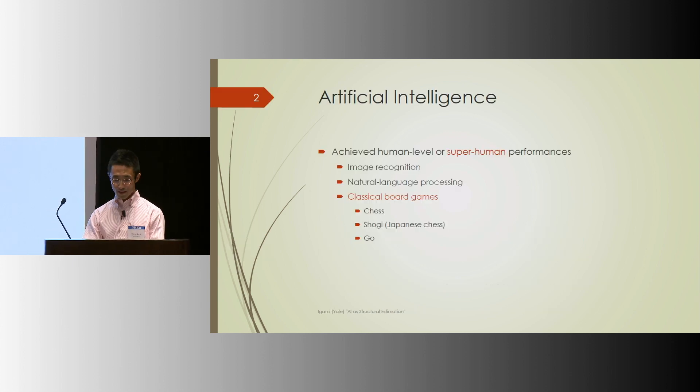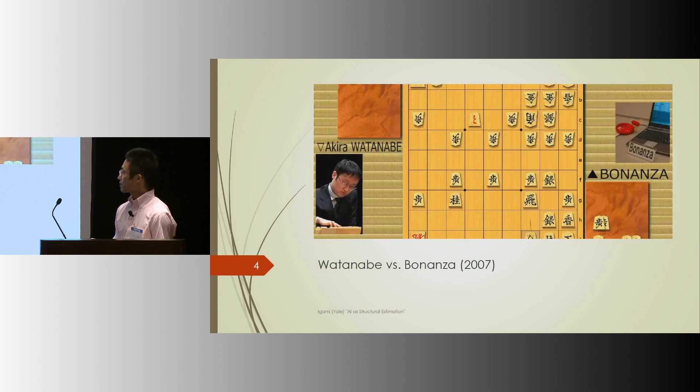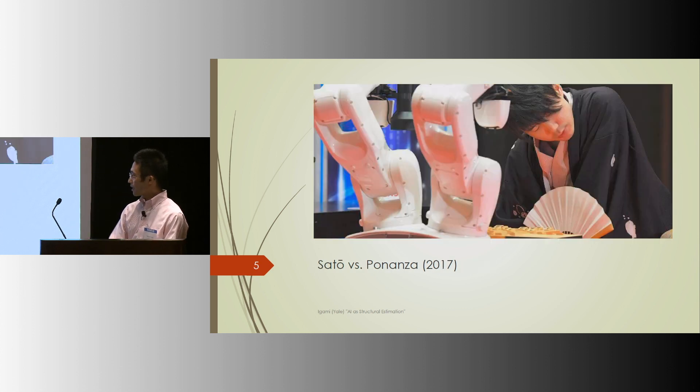Once upon a time, classical board games like chess, Shogi, which is Japanese chess, and Go were thought to be too complicated for machines. But in 1997, IBM's Deep Blue defeated the world's champion of chess. In 2007, a machine learning based program called Bonanza challenged the champion, one of the top two title holders, and got beaten up. But then 10 years later, last year...